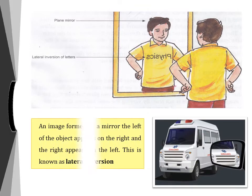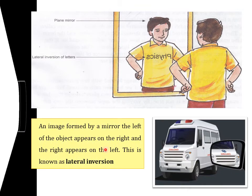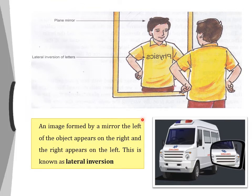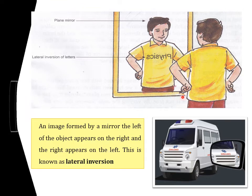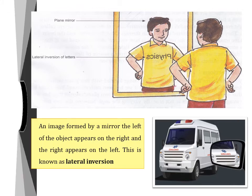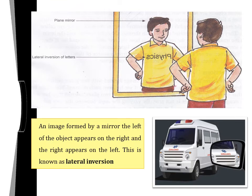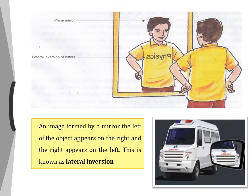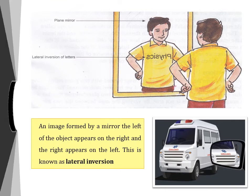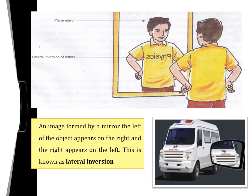The virtual image formed by a plane mirror has several features: it is upright (erect), it is the same size as the object, and it cannot be obtained on a screen — it is formed behind the mirror. Also, the left of the object appears on the right in the image and the right appears on the left. This effect of reversing images from left to right is termed lateral inversion, so the virtual image formed by a mirror is laterally inverted.